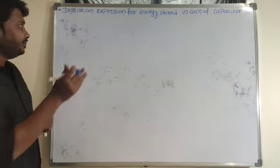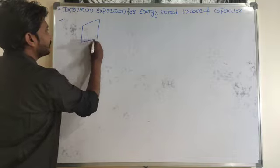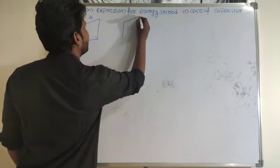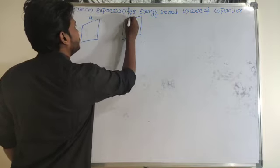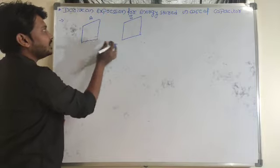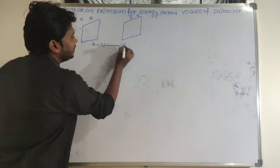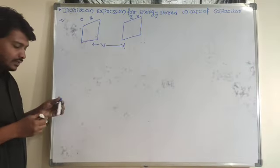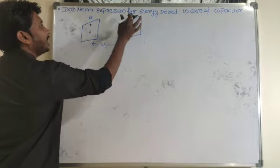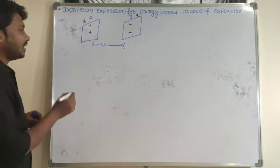Let me derive the expression for energy stored in a capacitor. Consider a parallel plate capacitor with plates A and B placed parallel to each other. Initially, the charge on each plate is 0. Now, by applying a potential difference V, Q amount of charge develops on the plates. I need to find the work done required to deposit this charge, as that work done will be stored as potential energy.